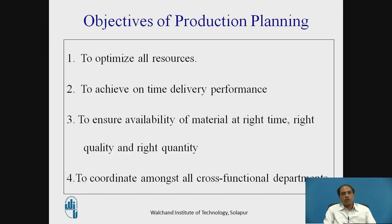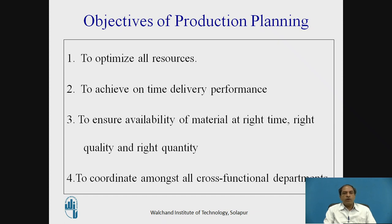The objective of production planning is to optimize all resources — man, material, machine, equipment, hardware, software, and all other accessories and utilities. Optimal resource utilization ensures profits and profitability. Another key objective is to achieve on-time delivery performance. Nowadays, the competitive advantage lies in 100% on-time delivery performance, as quality and specifications are taken for granted. The only variable that affects business and gives customer satisfaction is on-time delivery performance.